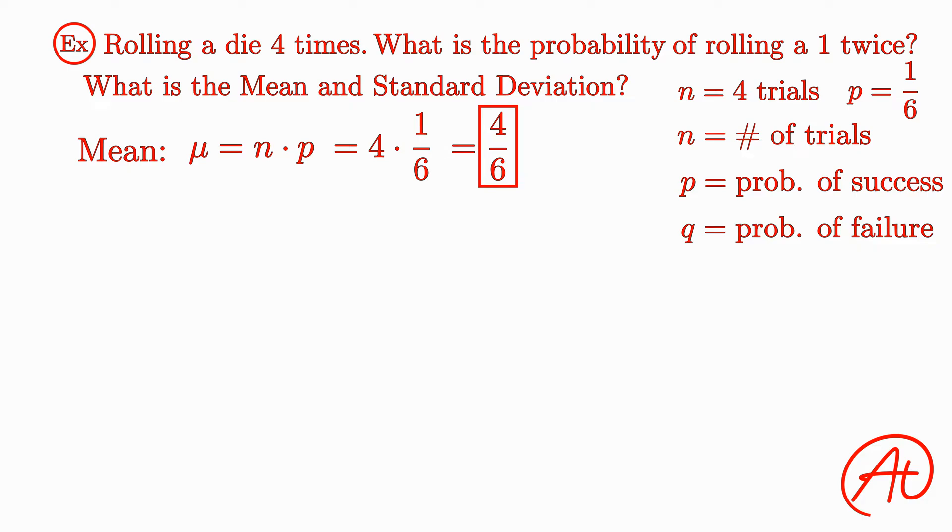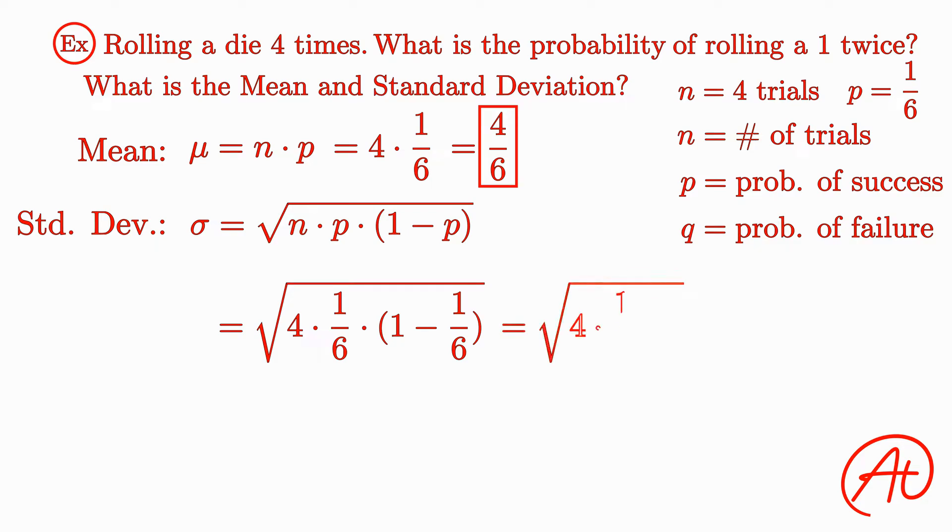Next, to calculate the standard deviation, we would take the square root of n times p times (1 minus p), which would be the square root of 4 times 1/6 times (1 minus 1/6), or 4 times 1/6 times 5/6, or equal to 0.745.